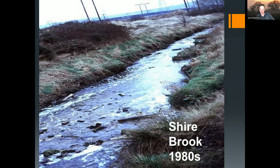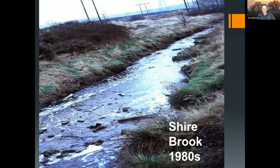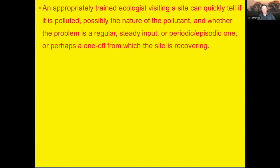The Shirebrook in the 1980s was pretty grim — it had gone under a deep landfill, so the water coming out stank, was anaerobic, and had all sorts of contamination from going underground away from oxygen. It had also been canalised — straightened and in some sections culverted — and disconnected from its floodplain, with big banks along either side as an engineering solution to stop flooding. That means the river no longer functions as a living watercourse within its floodplain, which in the long term is a disaster. An appropriately trained ecologist visiting a site can quickly tell if it's polluted, possibly the nature of the pollution, and whether it's a regular steady input or a one-off from which the site is recovering.